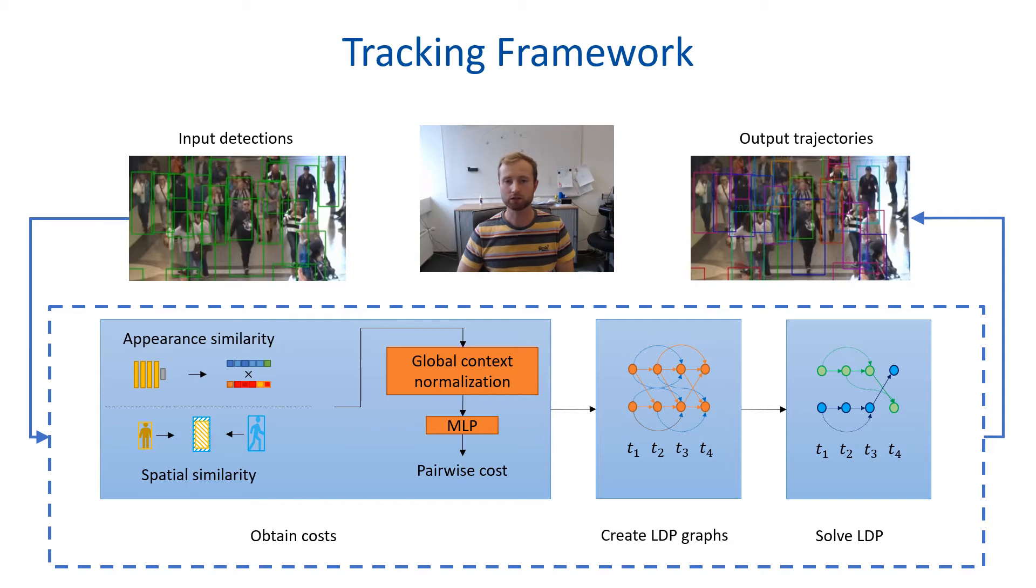For a given detection set, we first create lightweight features and classify if detections belong to the same trajectory or not. Based on this, we create a sparse LDP graph and finally, this is the highlight, we solve the problem with our novel approximate solver based on a dual decomposition framework.